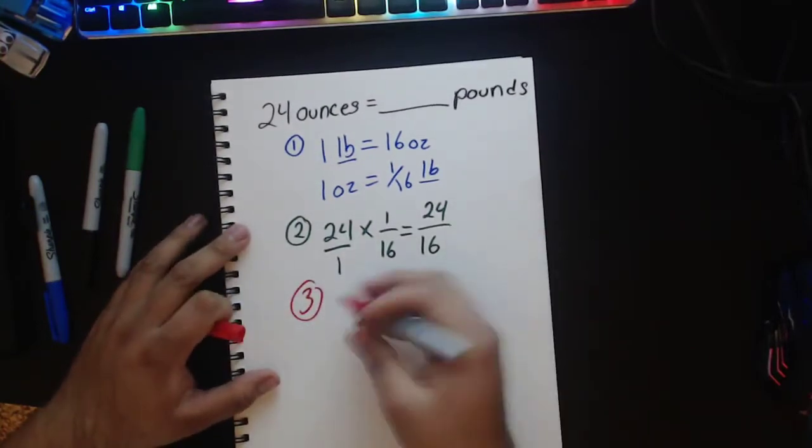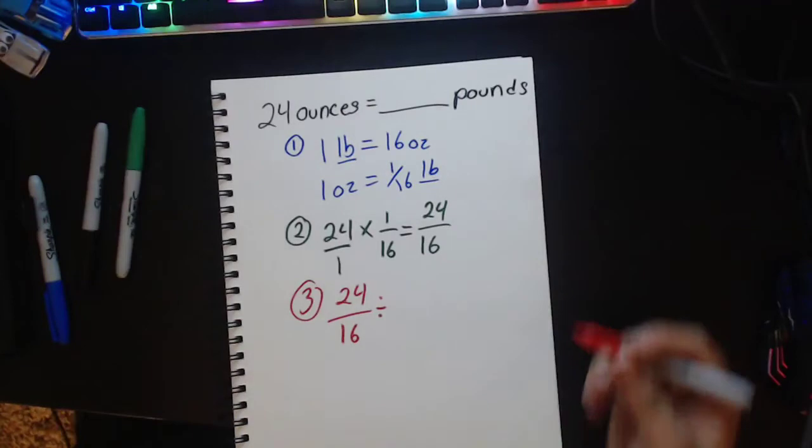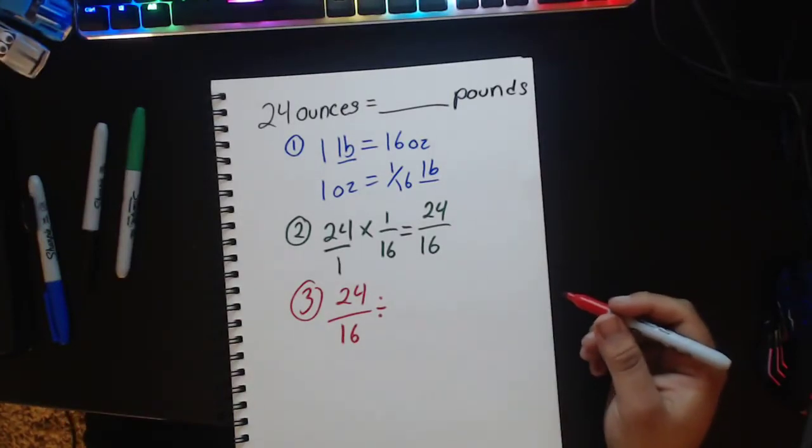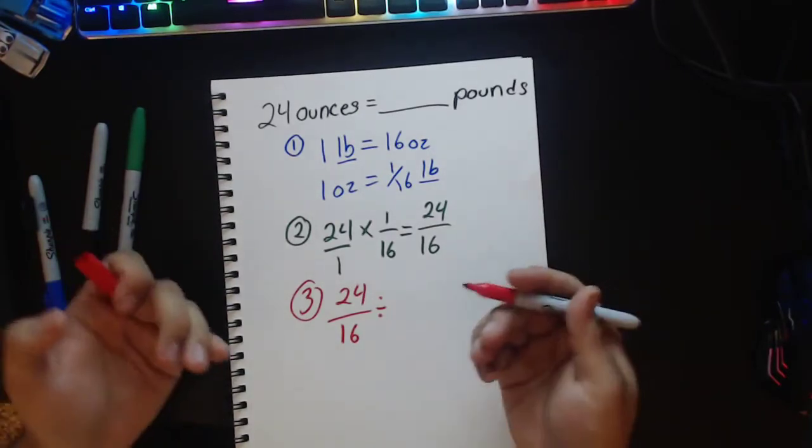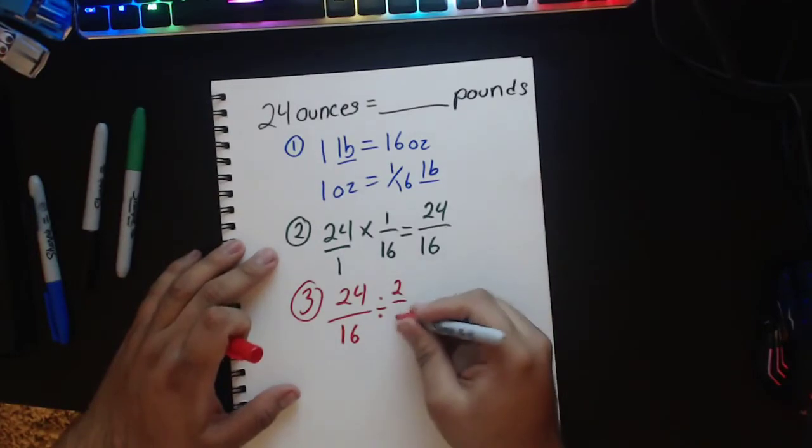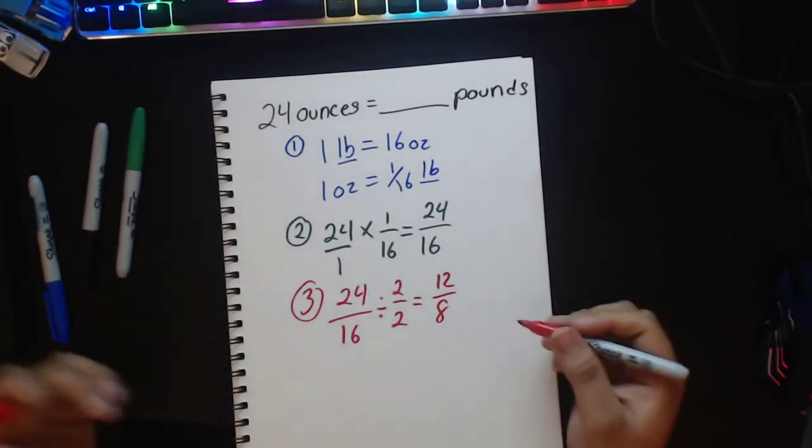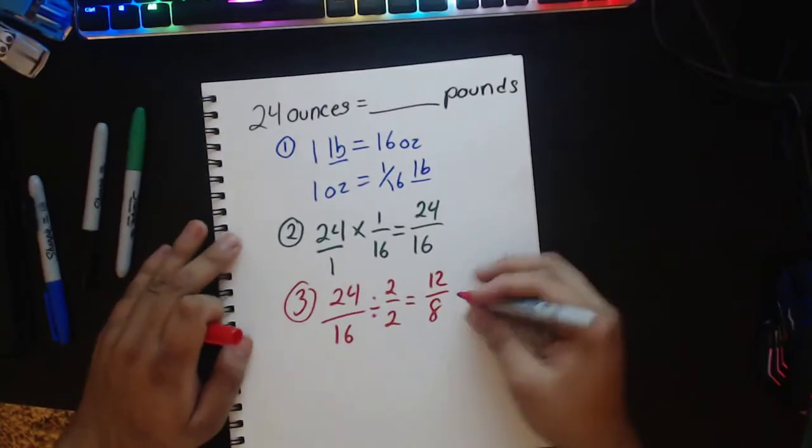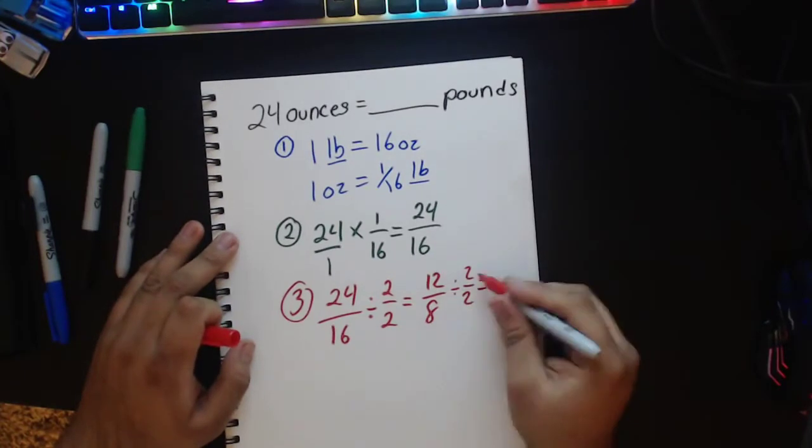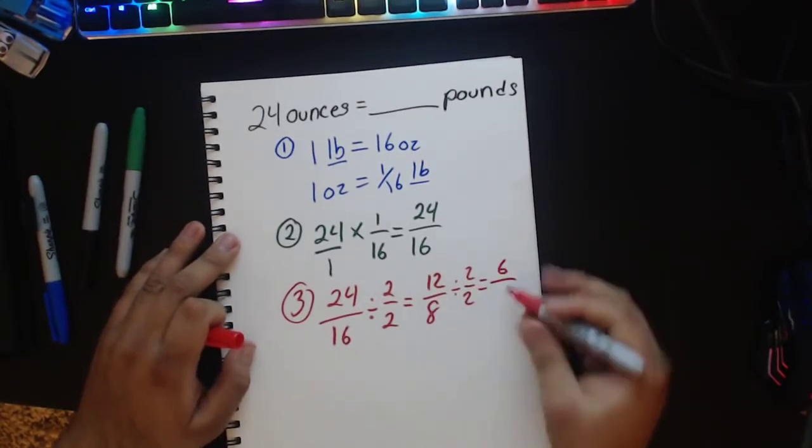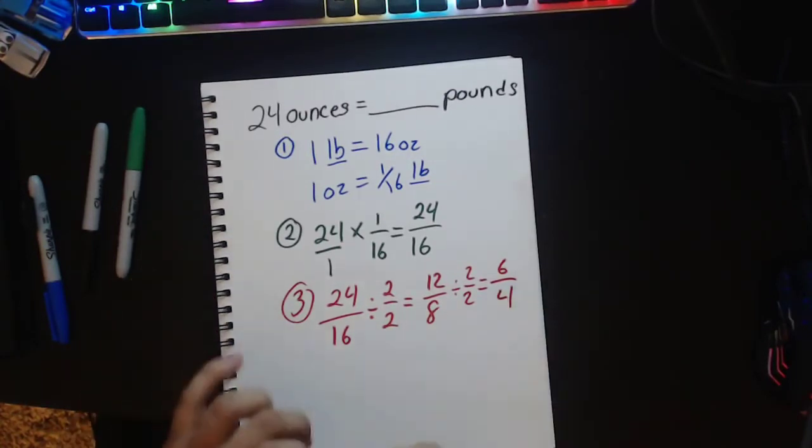Now our next step is to create a mixed number but I'm going to simplify it first. Maybe that'll make it a little bit easier. Now I know that 2 will go into both these numbers because they are even. So I'm going to simplify by 2 over 2, which will give me 12 and then 8. These two are also even so I can go further. Divide by 2 over 2, which will give me 6 and 4.